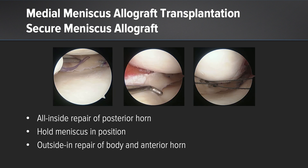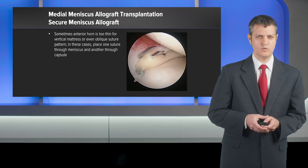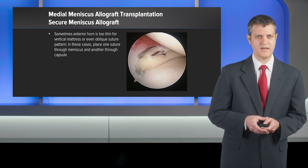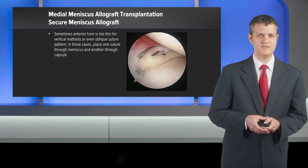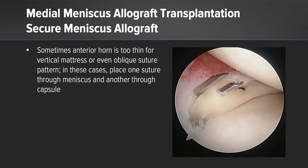The next step is to secure the meniscus allograft further. I use an all-inside repair of the posterior horn. I hold the meniscus in position and then do an outside-in repair of the body and anterior horn. For the anterior root, I place a biocomposite anchor. Sometimes parts of the anterior horn are too thin for a vertical mattress or even oblique suture pattern, and so in those cases, I place one through the meniscus and then the other through the capsule.